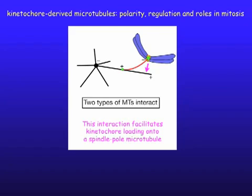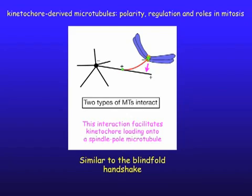We argue that this is similar to the blindfold handshake played by Etsushi and Shinya. By extending microtubules from both a spindle pole and a kinetochore, they can find each other more quickly — like the blindfold handshake. We also found that kinetochore-derived microtubules disappear quickly once the kinetochore is loaded onto a spindle pole microtubule. Thus, a kinetochore-derived microtubule has a short lifetime and does not become a part of the metaphase spindle.